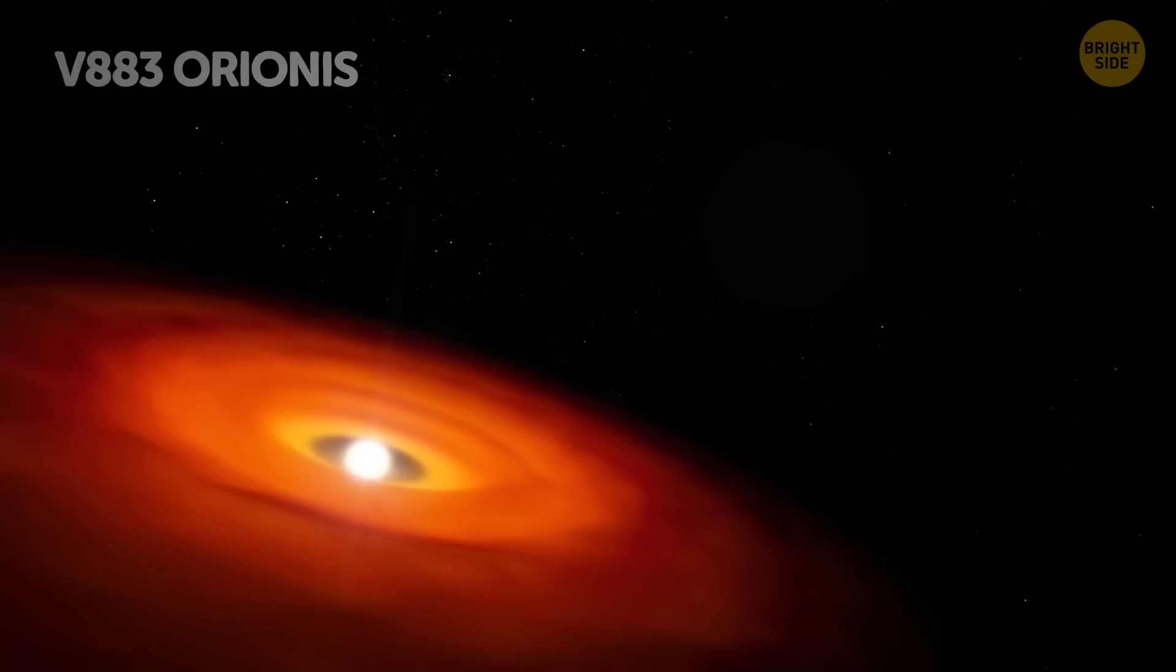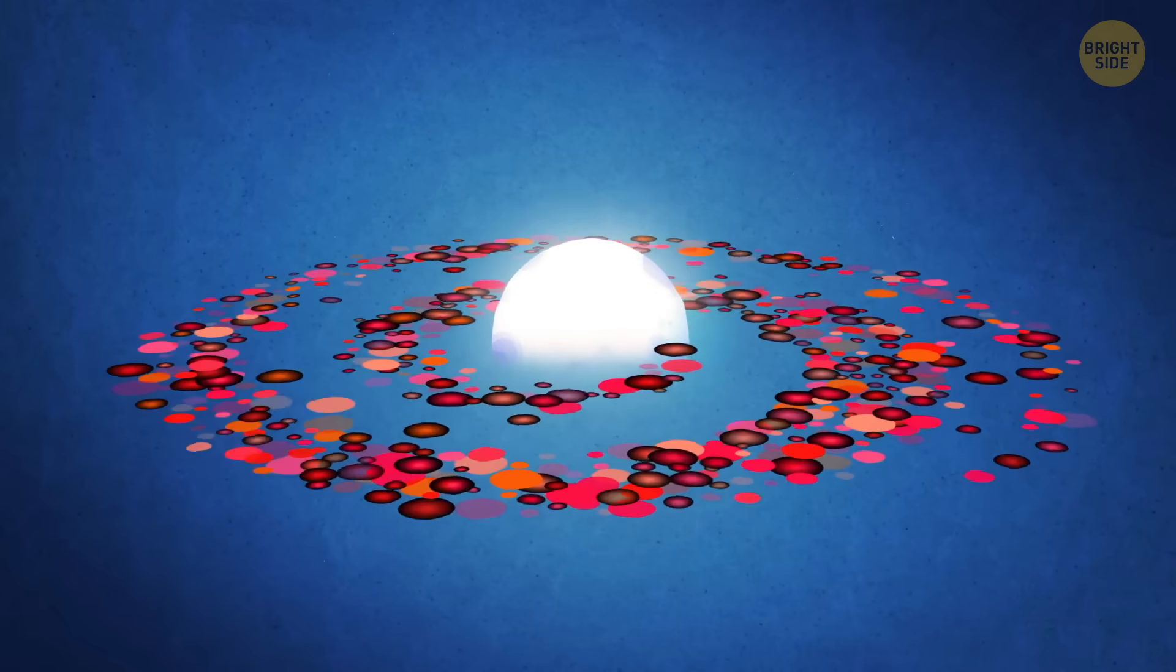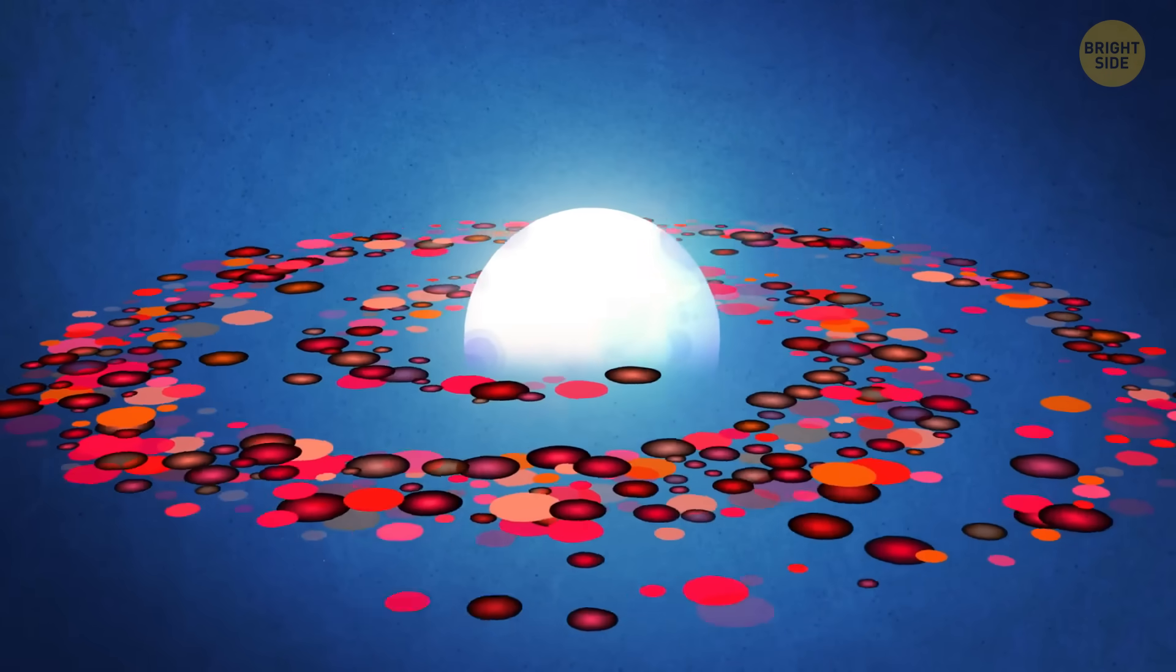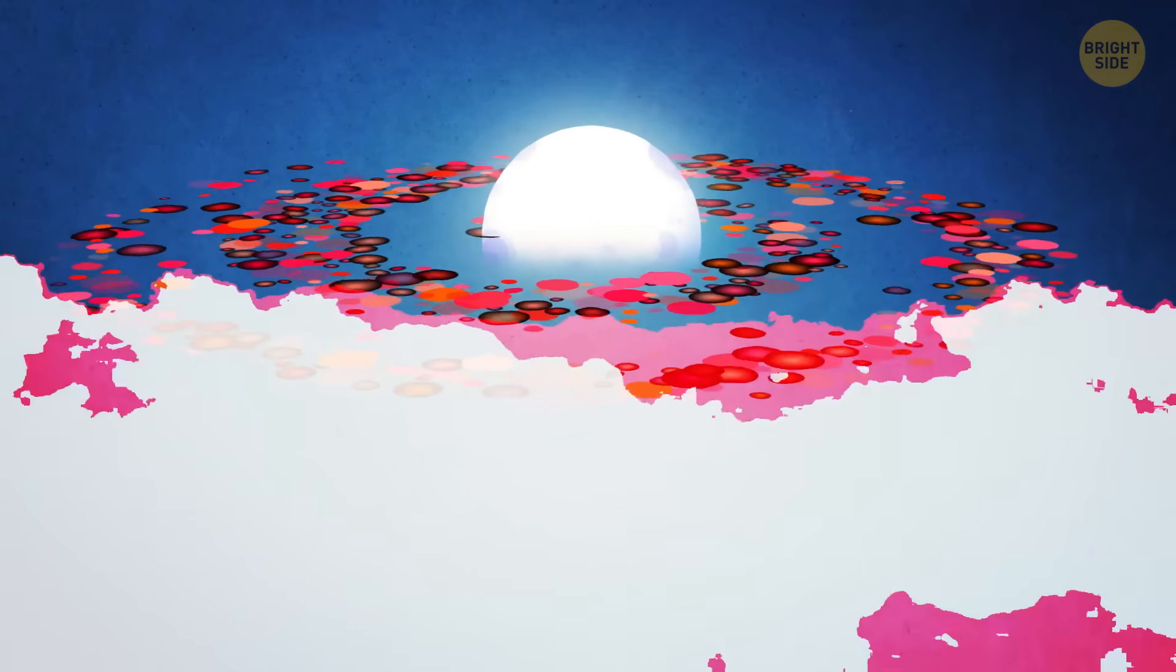But how exactly did it happen? And where did it originally come from? When a star is being born, it's surrounded by a big cloud made of gas and dust called a molecular cloud. It's like a cosmic fog!